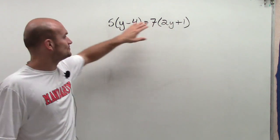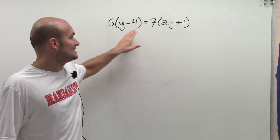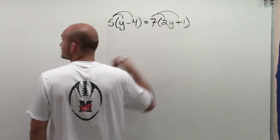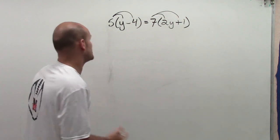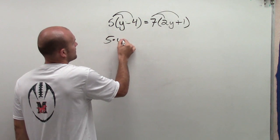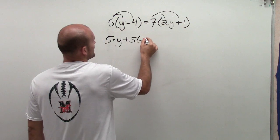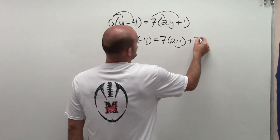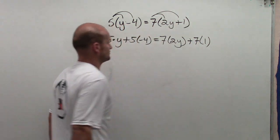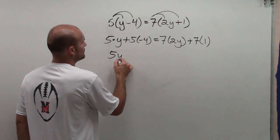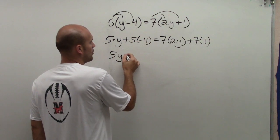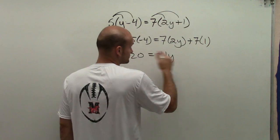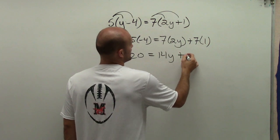Since I cannot simplify my expressions inside my parentheses, I'm going to apply the distributive property, which tells me to take my number outside the parentheses and multiply it to both terms inside. So 5 times y, and then positive 5 times negative 4, equals positive 7 times 2y plus positive 7 times 1. So now 5 times y is 5y, positive 5 times negative 4 is negative 20, equals 7 times 2y which is 14y, and 7 times 1 is positive 7.